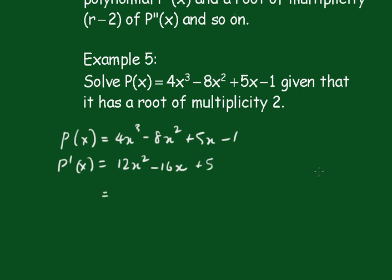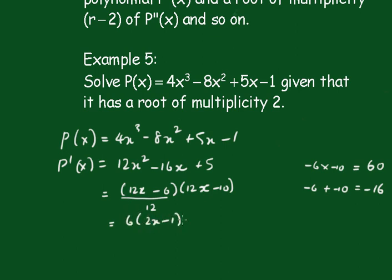We need to factorize that, so what two numbers multiply together to give me 60, multiplying these two together, and add up to give me minus 16. Clearly that's going to be minus 6 and minus 10. So that's going to be 12x minus 6 and 12x minus 10 over 12. We'll take out the 6 here, so we get 6 outside of (2x - 1), and we'll take out the 2 here, that's 2 outside of (6x - 5), and 12, which gives me (2x - 1)(6x - 5).